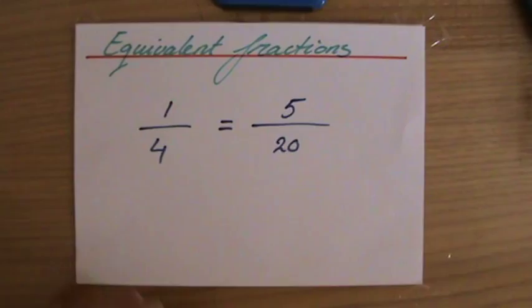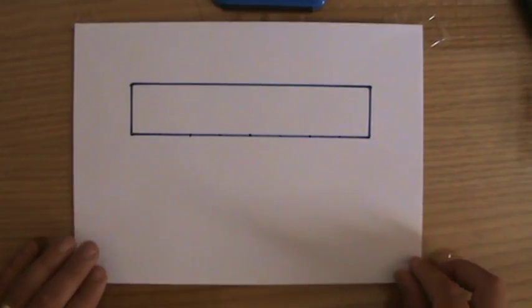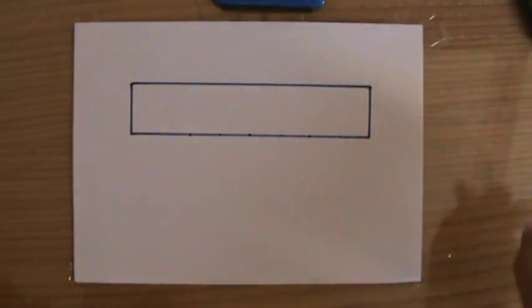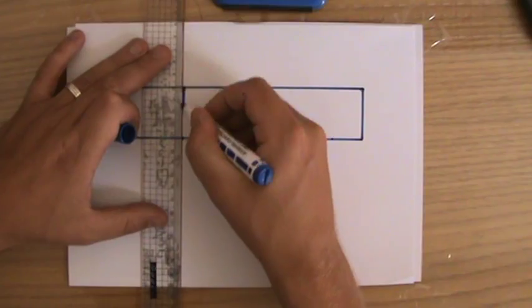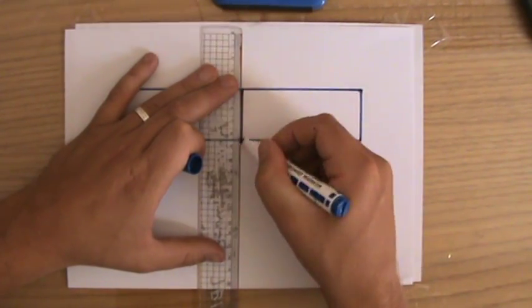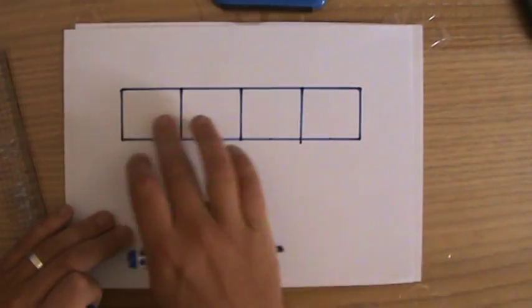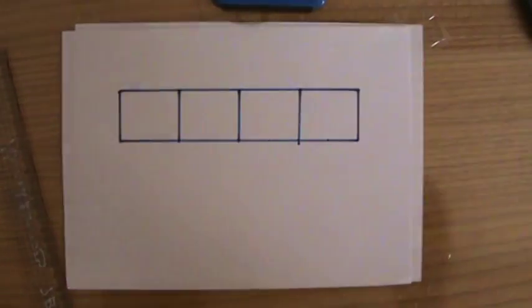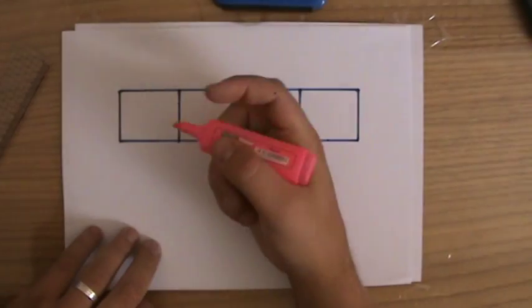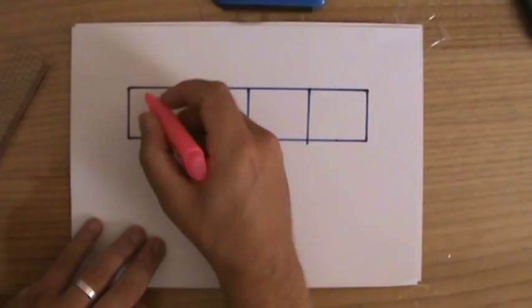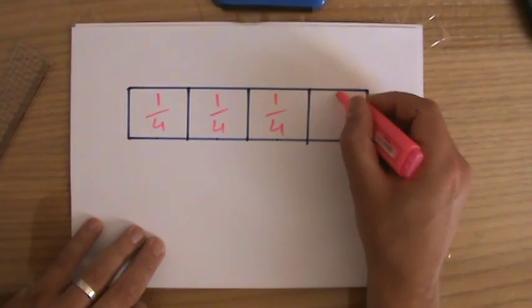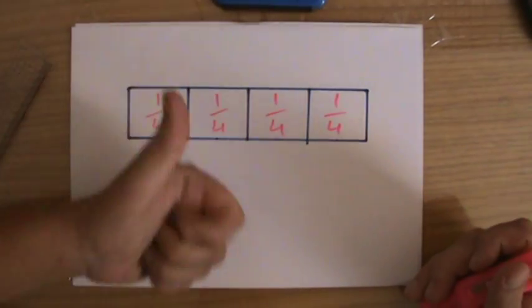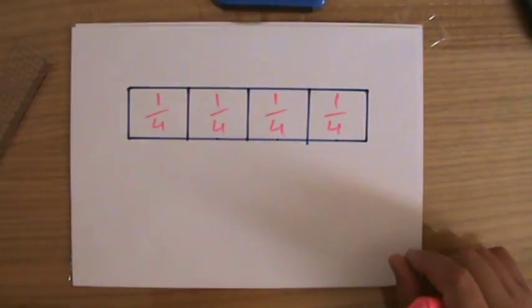I'm going to show you with two examples why these two fractions are equivalent. Let's say this is a piece of chocolate — we all like chocolate. It's a big chocolate bar and I'm going to divide it into four equal parts: one, two, three, four. One part then is one chocolate bar divided by four, so every part is a quarter. Four quarters add up to one again: one quarter, two quarters, three quarters, four quarters is four over four.